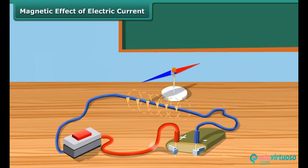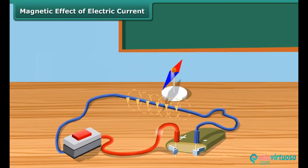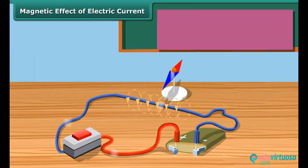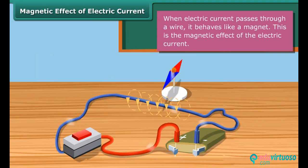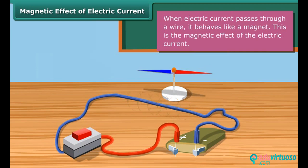The needle gets deflected from its north-south position when current is passed through the wire. When the electric current is switched off, the needle returns to its original position. This shows that an electric current produces a magnetic field around it.